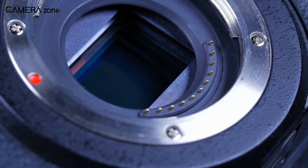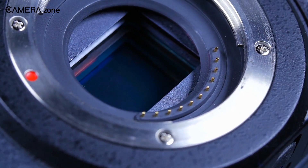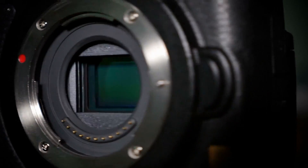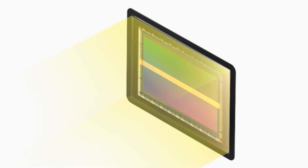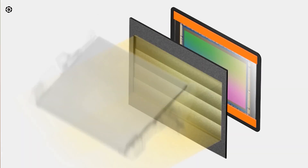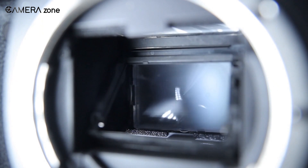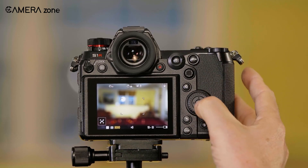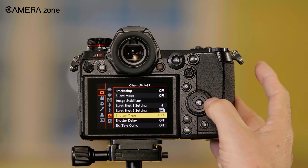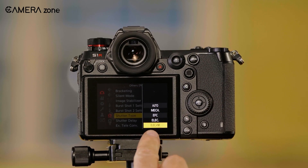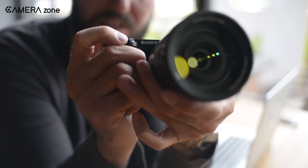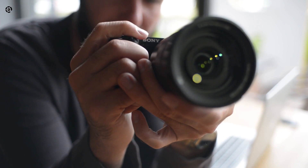So that was all about camera shutter types, their usage, and their pros and cons. Though camera shutter has significant importance in photography, manufacturers seem reluctant to bring innovations to it. But we hope that future days will come with more improved shutters that will amplify our photography limits. What are your thoughts about camera shutters? Let us know in the comment section.